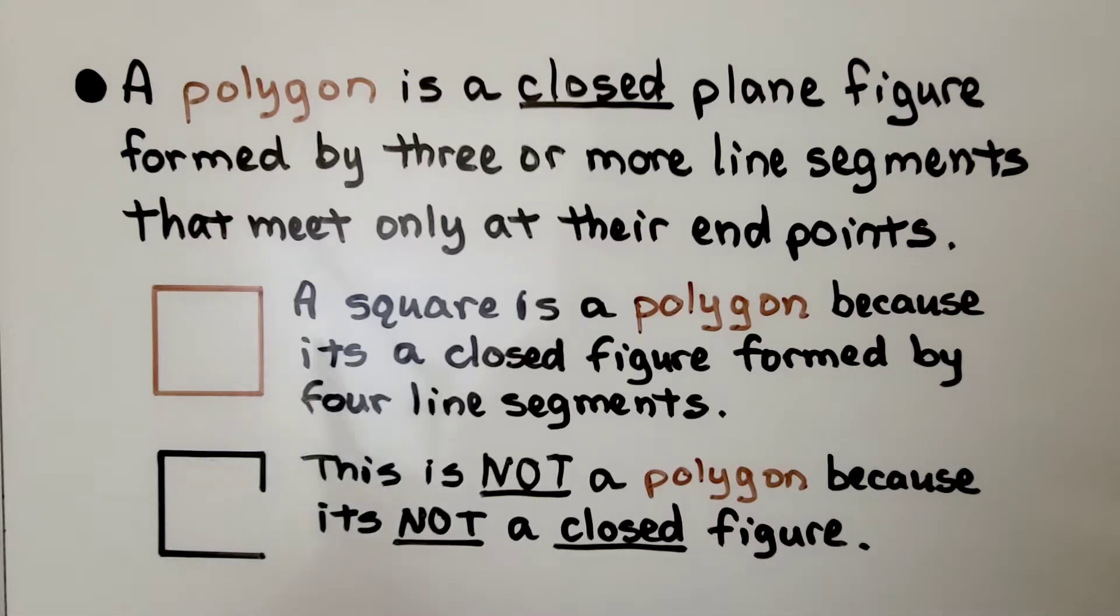A square is a polygon because it's a closed figure formed by four line segments. This is not a polygon because it's not a closed figure. We have an opening here.